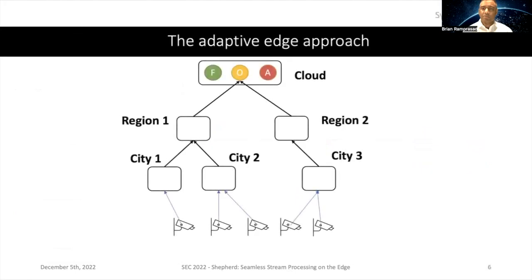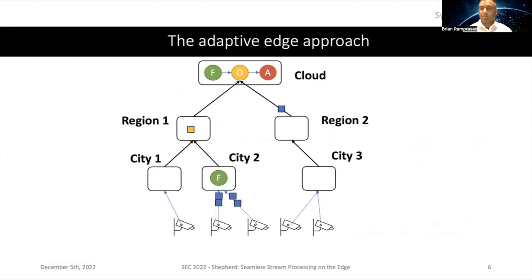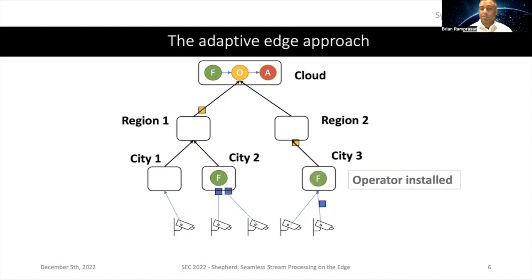So how does the adaptive edge approach work? In this example, we're sending video frames to the City2 data center where they're being filtered. What happens if a camera detects cars in City3, where we have no filter operator installed? The data is just being sent back to the cloud unfiltered — the highest cost, because we're potentially sending useless data to the cloud. The adaptive edge approach installs the filter operator at City3 so we can do filtering at that city-level data center and reduce the amount of data being sent back.